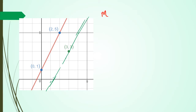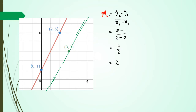So to find the gradient of the red line, I have change in y divided by change in x. So I have 5 minus 1 divided by 2 minus 0, and I've got 4 over 2 which equals 2. Remember that for parallel lines, they have to have the same slope because if they have the same slope they'll never actually meet. So parallel lines will have the same gradient. In this case, the gradient of the red line is 2, which means the gradient of the green line is also going to equal 2.